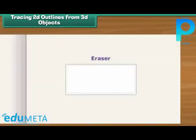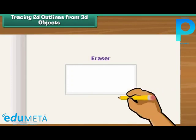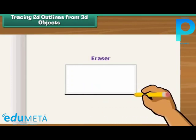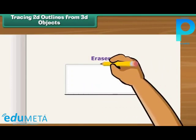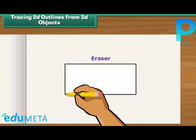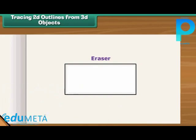Place an eraser on a sheet of paper. Draw lines along its outer edges. Remove the eraser — you can see a rectangle on the sheet.